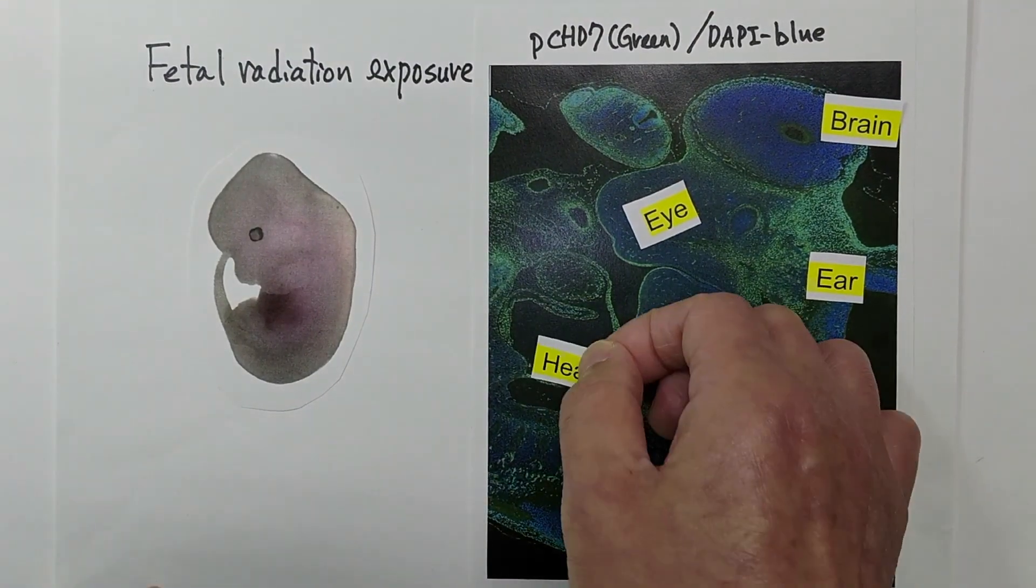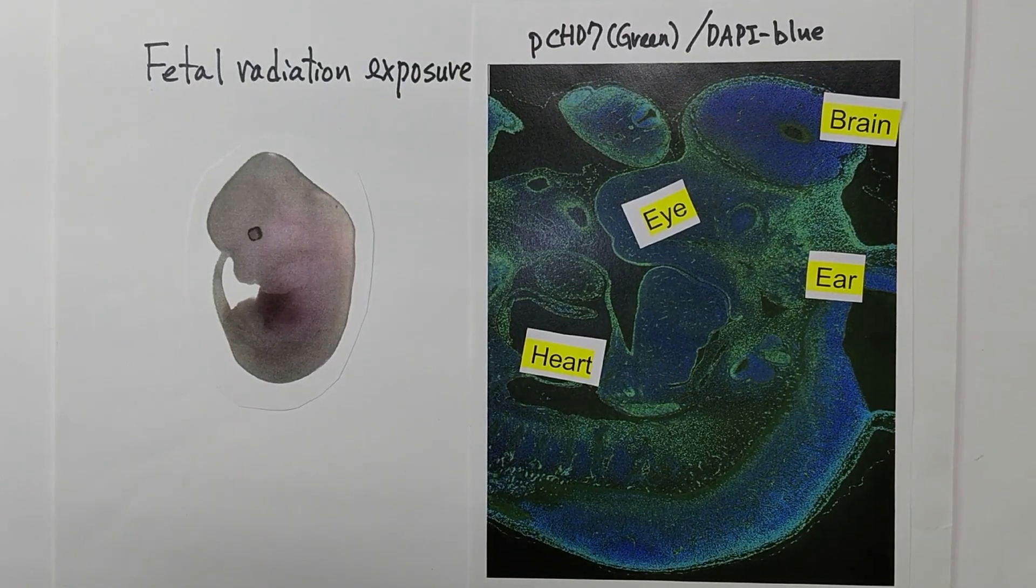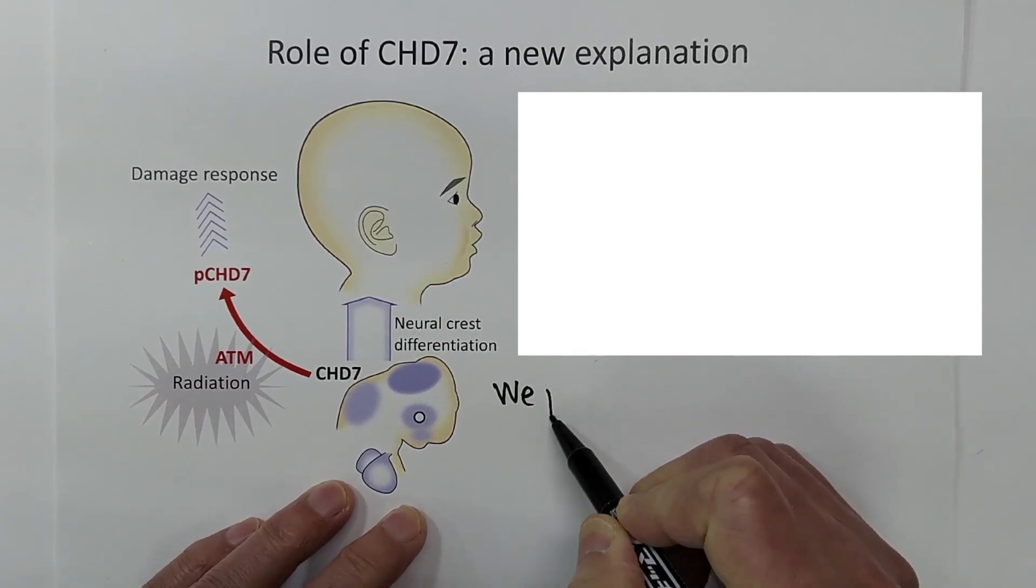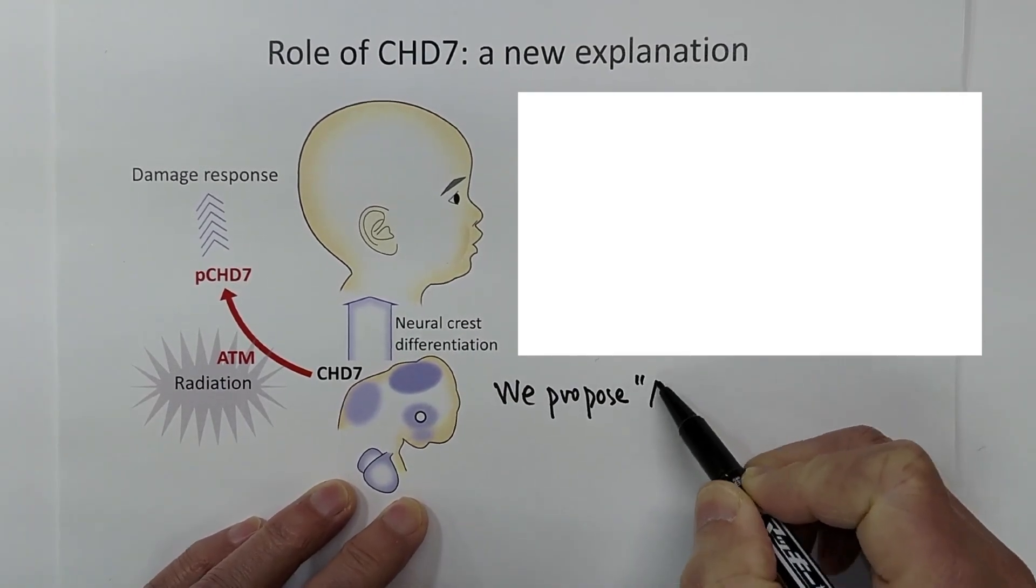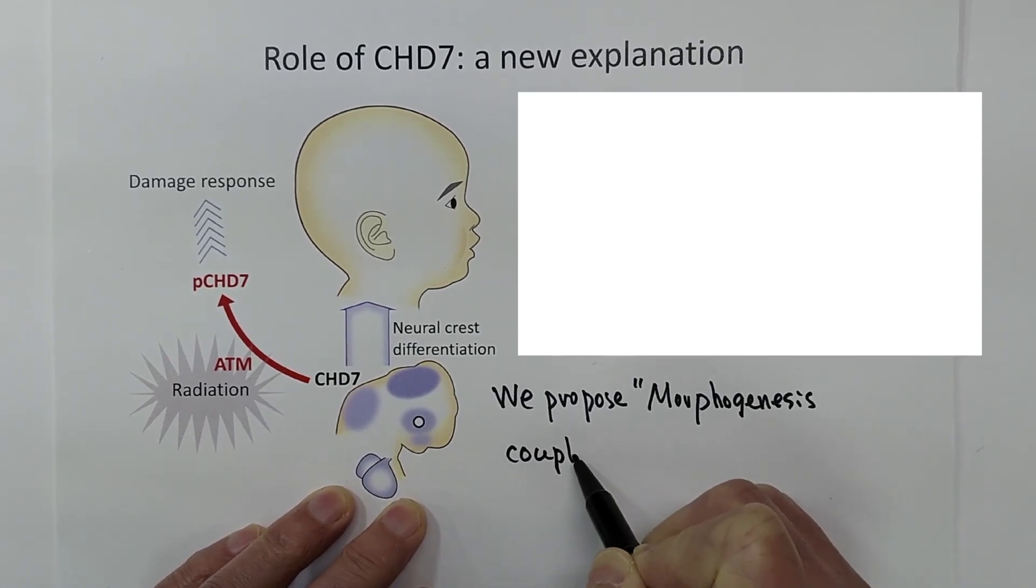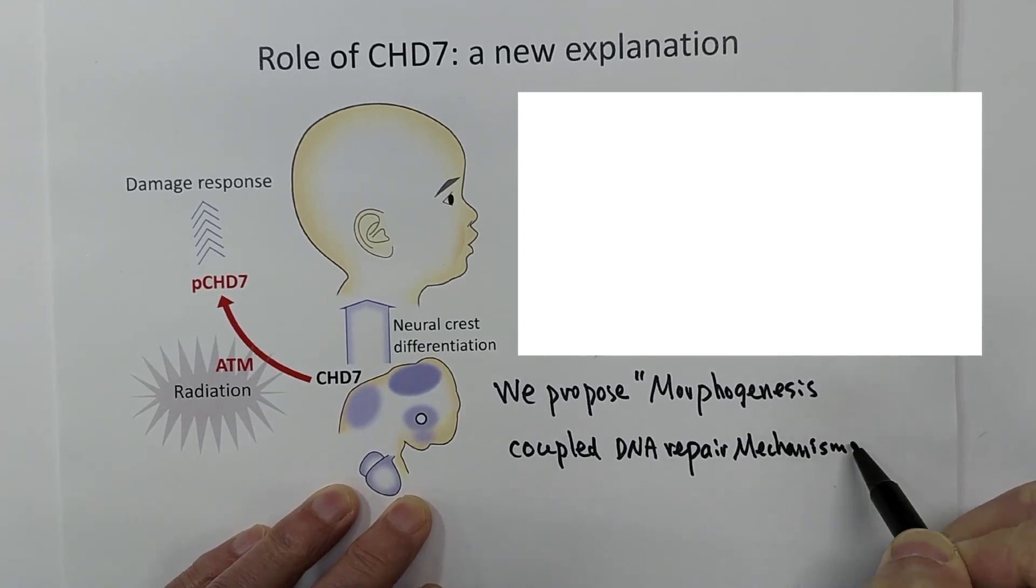This means that transcription factors that control neural crest differentiation and morphogenesis also have DSB stress response functions. In conclusion, we propose that there exists a morphogenesis-coupled DSB stress response mechanism during mammalian early development.